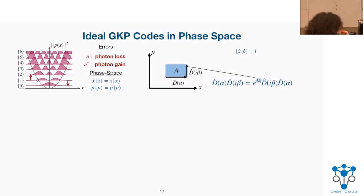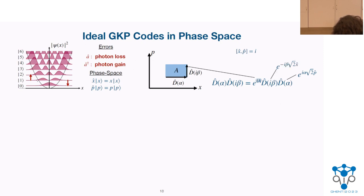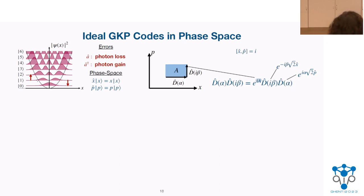To give you intuition: displacement in position does not change the momentum eigenvalue, so it must be an exponentiated momentum unitary. Similarly for displacement in momentum. Now acquainted with phase space, I'll show you the zero logical codeword for GKP. We use the Wigner function — the quasi-probability distribution in phase space — to visualize these oscillator codes. For the zero logical, it looks as follows.